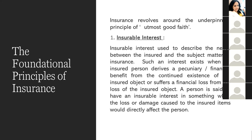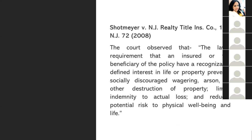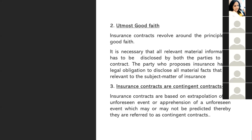You must have the right to the property or the object you're trying to insure — that is insurable interest. You must have an interest in the goods, property, or object you're trying to insure. Next, insurance contracts are contingent contracts — that is, upon the happening of an event, the amount will be released. For example, if you take fire insurance, the incident must occur for the amount to be released.